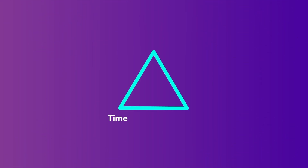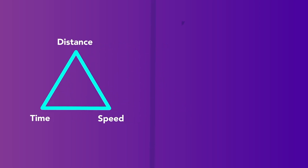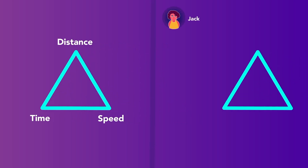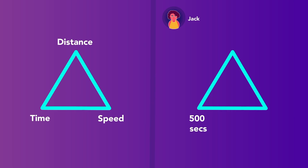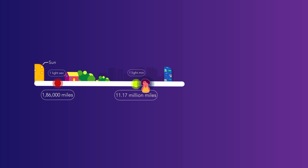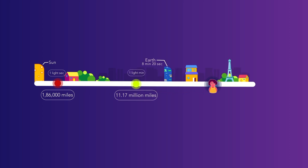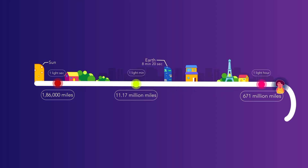Generally, we can calculate time, speed, and distance using this triangle. Jack ran at a speed of 671 million miles per hour in 500 seconds, and the distance between the Sun and Earth is derived to be 93 million miles. The distance that Jack travels in 1 minute is called a light minute, and with simple multiplication, the distance covered by Jack in 1 hour is called a light hour.